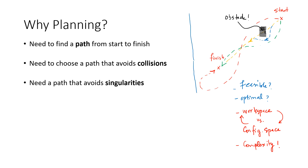Whenever you have singularity, you may have a difficult mathematical scenario — the determinant of the Jacobian is equal to zero, which means the rank of the Jacobian is reduced. When you have reduction in rank, the rows and columns of the Jacobian become linearly dependent. That means whatever is happening in the joint space may not directly be mapped onto the task space or workspace. So you need to avoid singularities as well, and that is an additional motivation to perform the planning exercise.